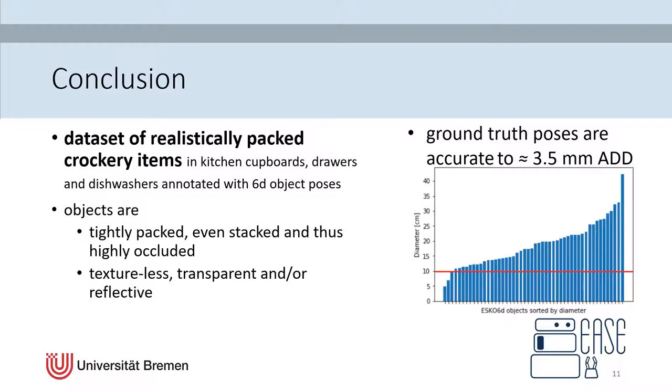In our paper, we conducted an extensive accuracy evaluation. In short, its result is that the ground-truth poses are accurate to 3.5 mm ADD. This means, if a pose is assumed to be correct, if its error is smaller than 10% of its diameter. For all but two objects, our ground-truth poses are more than 3-fold accurate.